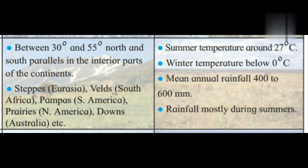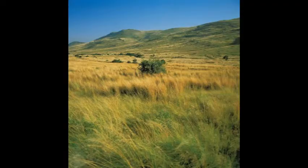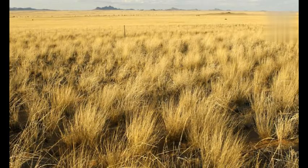Their climate has summer temperature around 27 degree Celsius, winter temperature below 0 degree Celsius, and annual rainfall of 400 to 600 millimeter, mostly during summers. In the natural vegetation, extensive grass ranches are seen, with short grasses growing in clumps. Grass gets dried up in winter. Elder and poplar trees are also found.